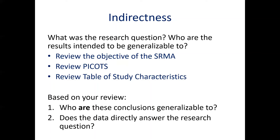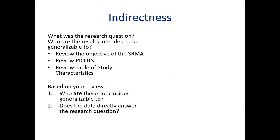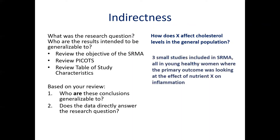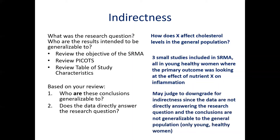Consider whether the included data directly answers the original research question. For example, if the SRMA research question is how X affects cholesterol levels in the general population, but only three studies were included and all were conducted in young, healthy women where the primary outcome was not cholesterol but inflammation, we may judge to downgrade for indirectness. Conversely, if the participants captured represent the target population and the data directly answers the original research question, one may conclude there is no serious concern for indirectness and would not downgrade.